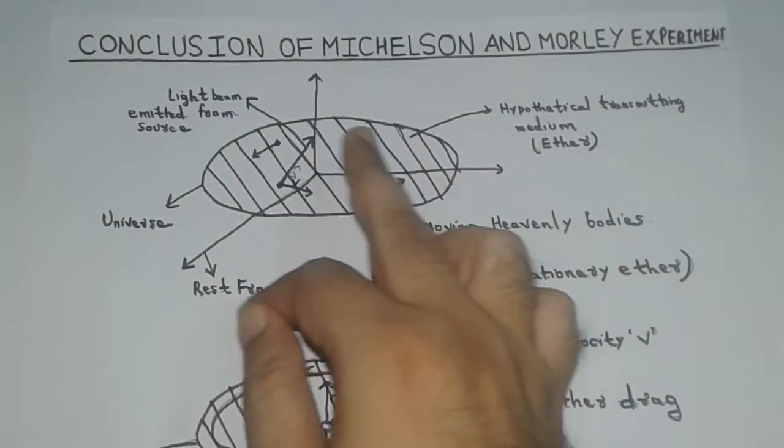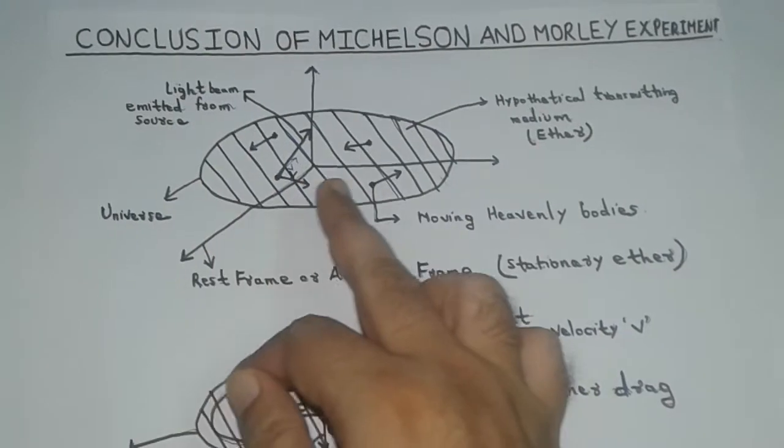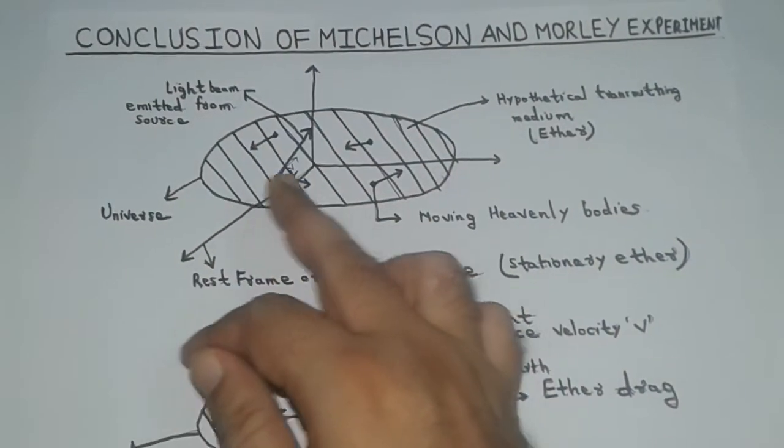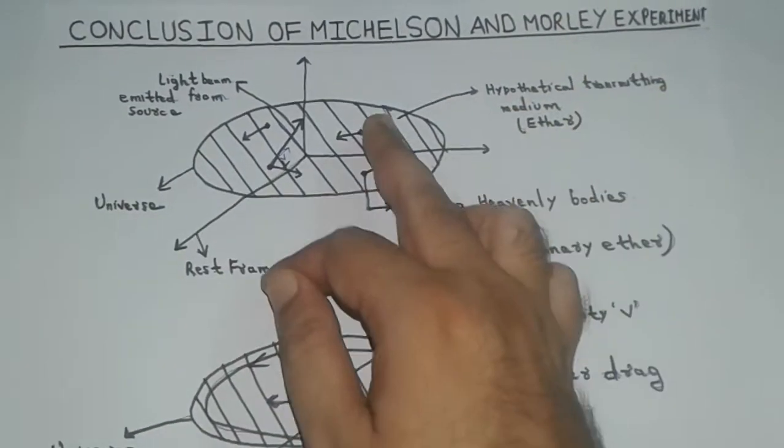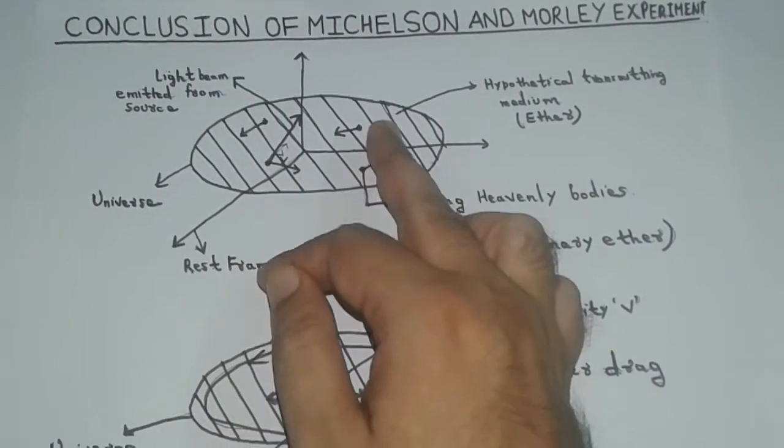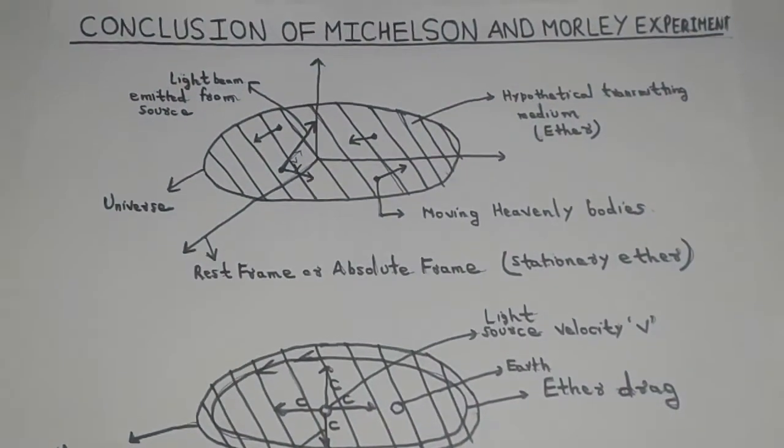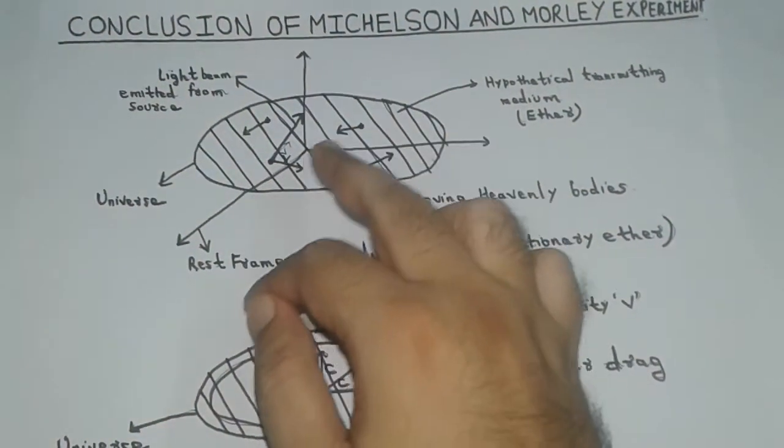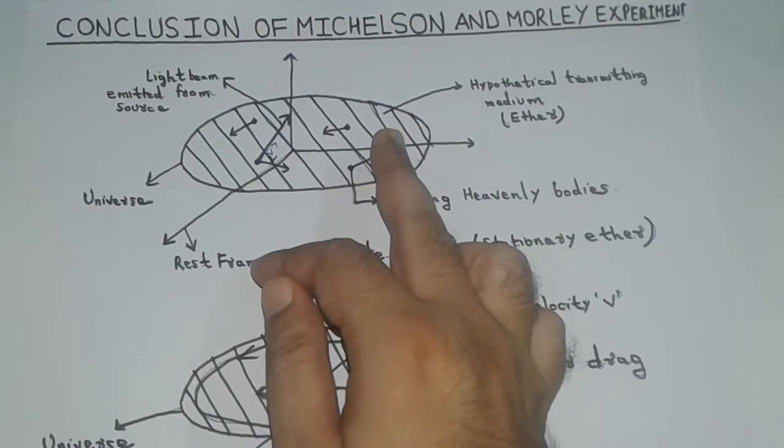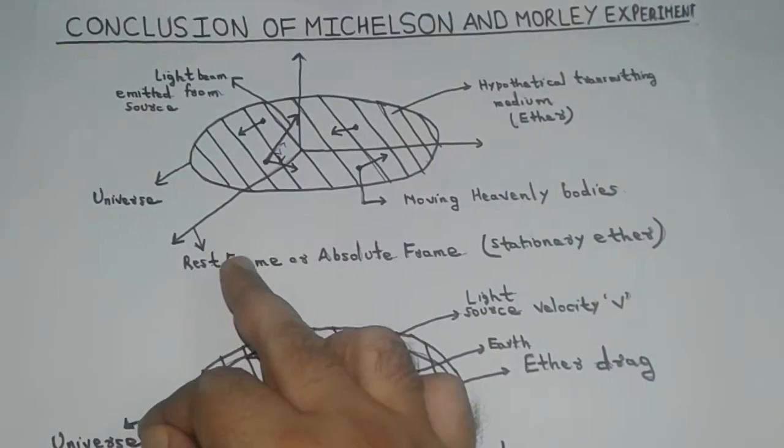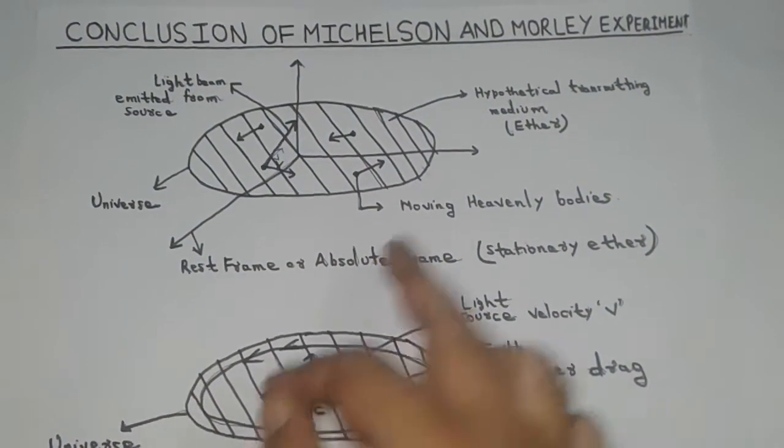The hypothetical transmitting medium, which fills the entire space of universe, is called ether. So in this figure, this shaded portion is ether. Initially, ether was assumed to be stationary and was considered as a rest frame or absolute frame.